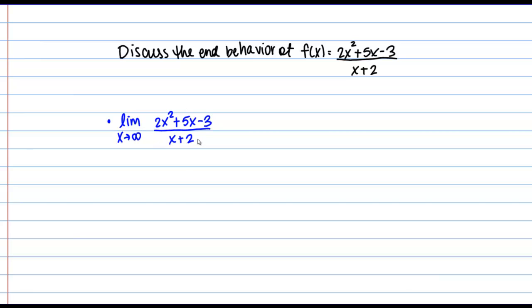If we start by thinking about what's happening to the numerator and denominator as x goes to infinity, we're going to discover that both the numerator — this quadratic expression — and the denominator — this linear expression — are going to approach infinity as x goes to infinity. So we end up with the form infinity over infinity, which means we need to do more algebra to figure out the answer. This infinity over infinity is what we call an indeterminate form.